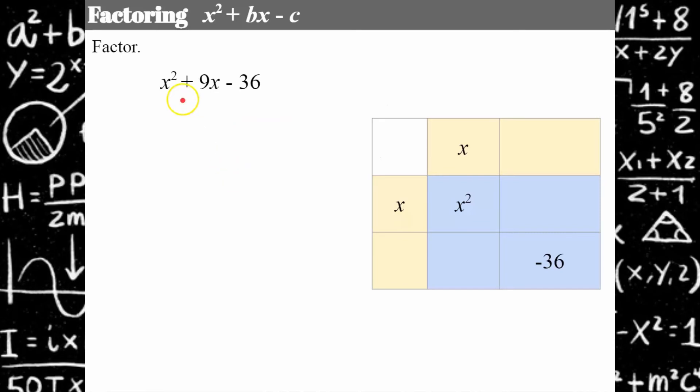Here's an example. Here's my polynomial, my trinomial: x squared plus 9x minus 36. I've set up my visual representation of all of this. Here's my x squared. I know for sure that's what it's going to be. And then my product is going to be negative 36.